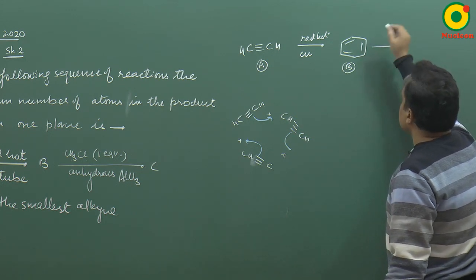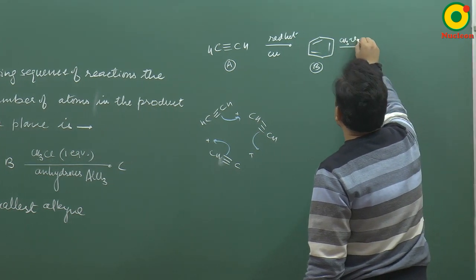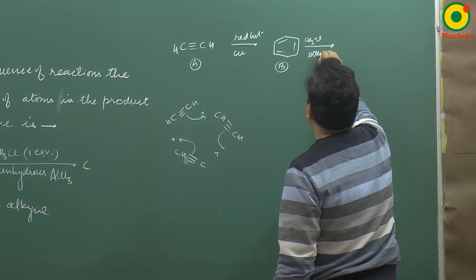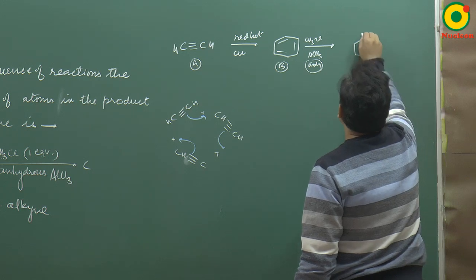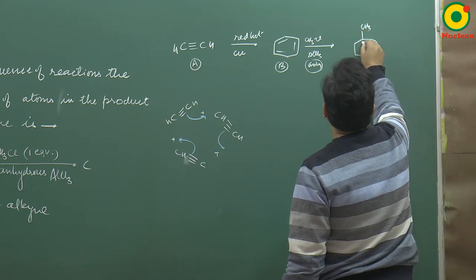Now after this, the reaction is done with CH₃Cl, one equivalent, in AlCl₃ anhydrous presence. So one CH₃ will be added. This is toluene.